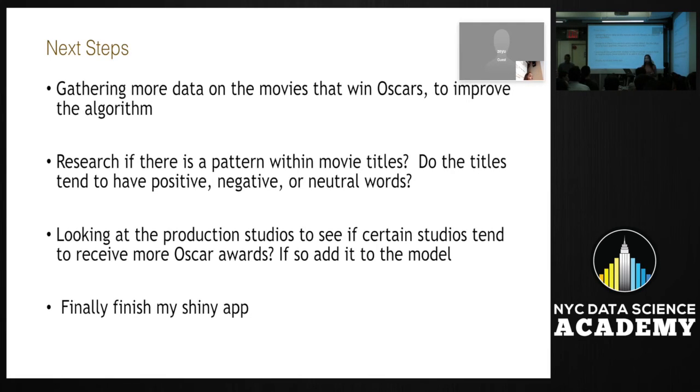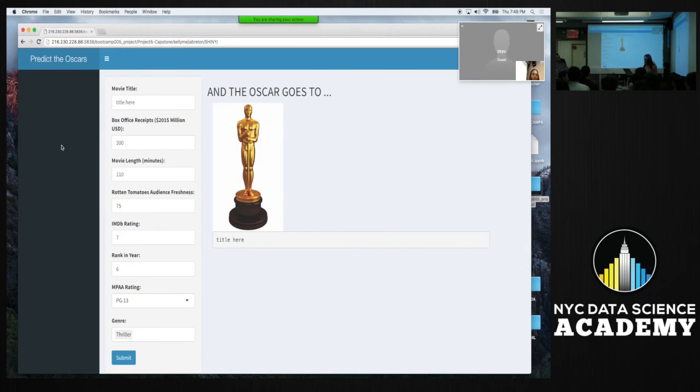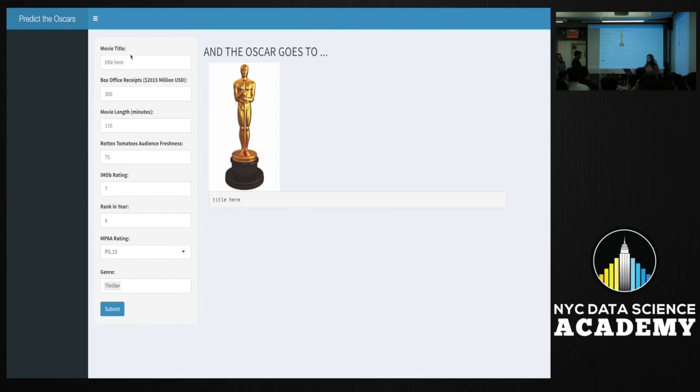And finally, I want to finish my shiny app. It's not complete, but I want to show you the shell of what I have in mind and what I plan to deliver to the client. This is the app. The client can enter the movie title here. Let's say it's NYC Data Science Academy. And let's say the box office receipts are 300. Let's say the movie length is 110 minutes. The audience freshness is 75. The IMDB rating is 7. The rank in year is 6. And let's say it's a PG-13 film with genre thriller. Let's say it's a drama. And let's say it's comedy. Submit. And then here the name change. Ultimately, what's going to happen is, if the model produces a success, it would say the NYC Data Science Academy is projected to receive an award, an Academy Award. And if the model predicts a failure, it would say NYC Data Science Academy is not projected to receive an Academy Award this year. And that concludes my presentation.